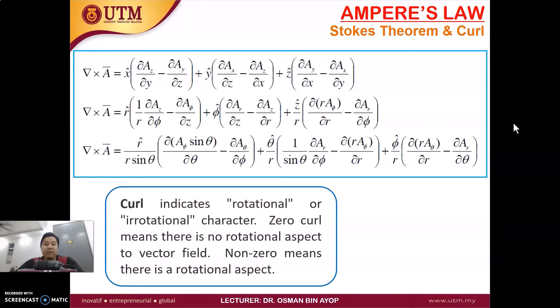So basically, curl indicates rotational or irrotational characters. Zero curl means there is no rotational aspect to the vector field. Non-zero means there is a rotation. So this is what we mean as rotational. The field rotates around the point.